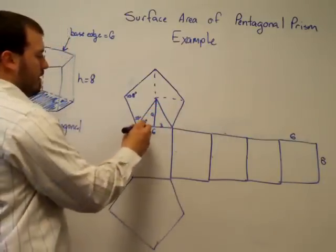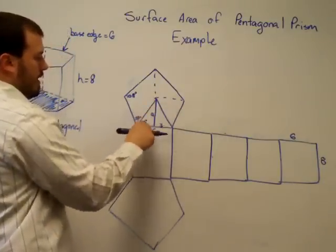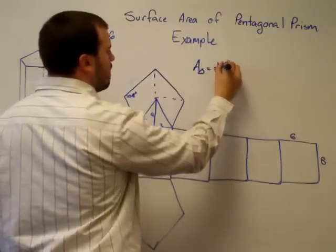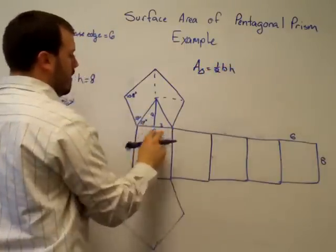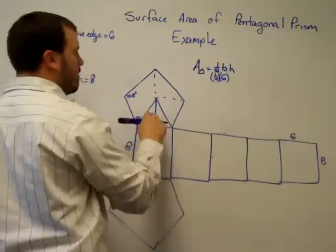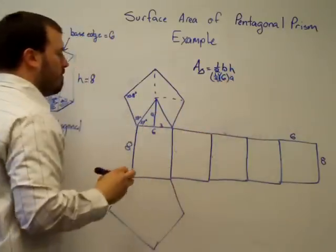That's the apothem. And now we need to find that apothem to find the area of any triangle. We need to do one-half of base times the height. I know my base is six, and the height is the apothem right there. That's what we're going to solve for.